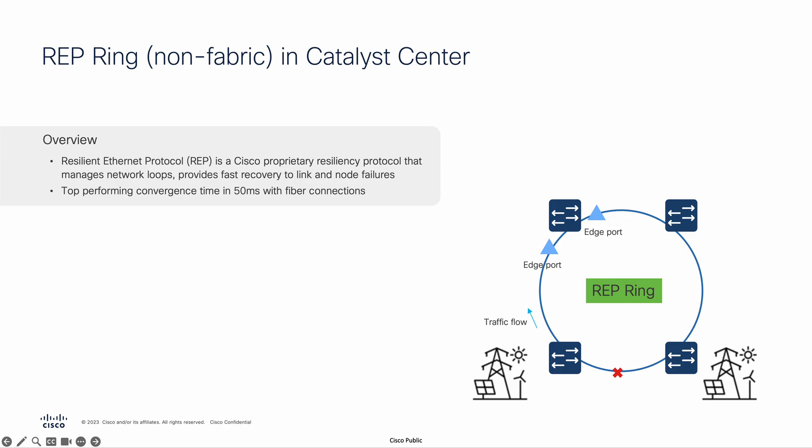In the event of a network failure, the blocked port is unblocked, transitions to a forwarding state, and then resumes traffic flow.